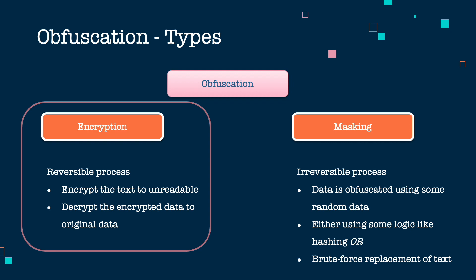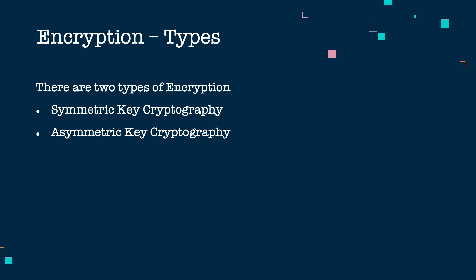We will look at different encryption techniques. There are two major types: symmetric key encryption and asymmetric key cryptography. Cryptography is a general science whereas encryption is a specific process, but I am using the words cryptography and encryption interchangeably throughout this video.